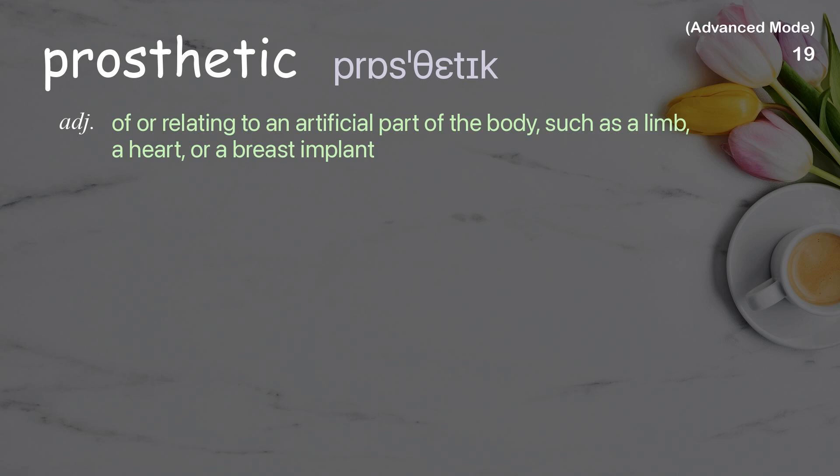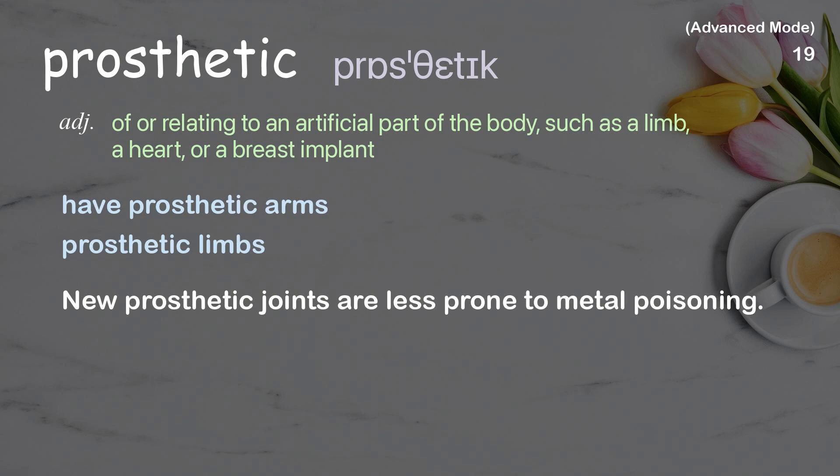Prosthetic: of or relating to an artificial part of the body such as a limb, a heart, or a breast implant. Examples: have prosthetic arms, prosthetic limbs. New prosthetic joints are less prone to metal poisoning.